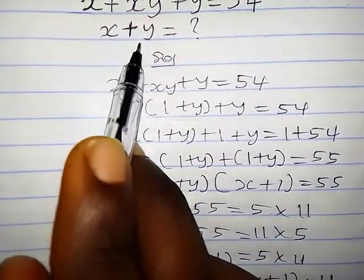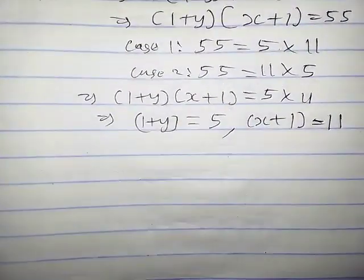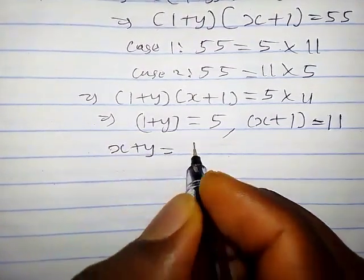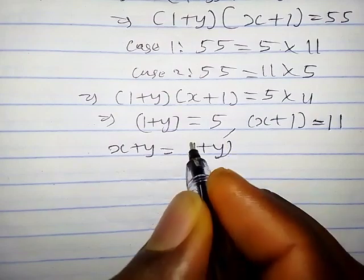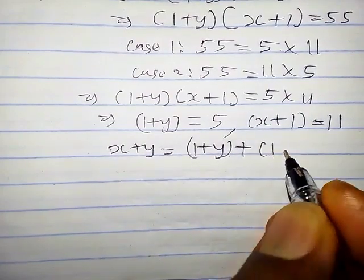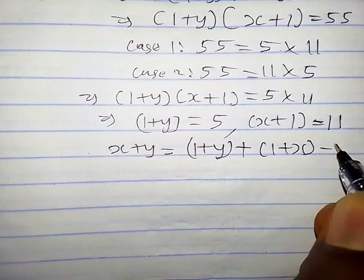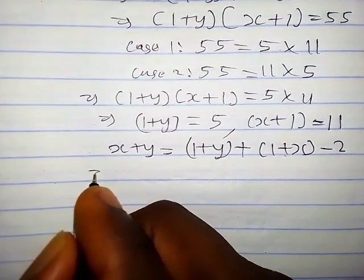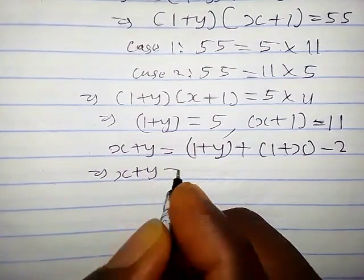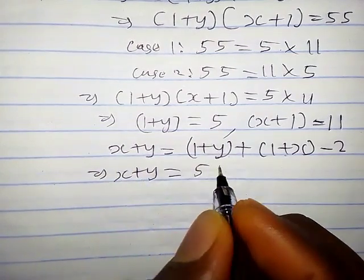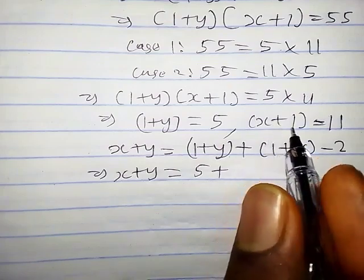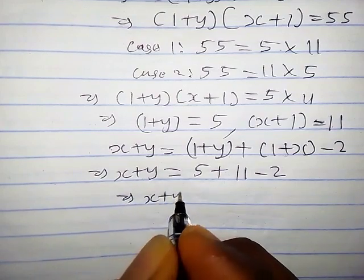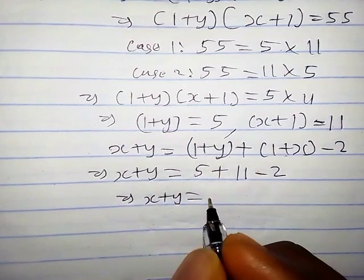Now we need to find x plus y. So x plus y can be written as 1 plus y, plus 1 plus x, minus 2. This implies x plus y equals — what is 1 plus y? That is 5. And 1 plus x, which is x plus 1, is 11, minus 2. So x plus y equals 14.